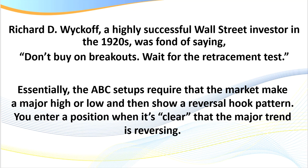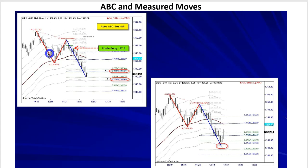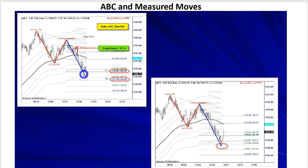Let's look at what Suri Dadala has to say about the ABC pattern. He has an excellent book with 64 or 66 different patterns, and the ABC pattern comes in at number two in his top ten. Looking at his example, we can see a rally up — here's your A, B, here's your C point — and the C is lower than the A, then away we go. He's also taken a measured move: from point A to B, extended from C down to D, as a potential target.